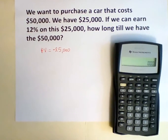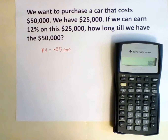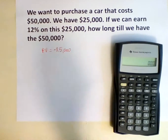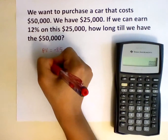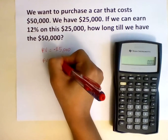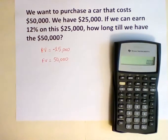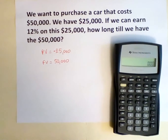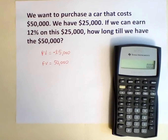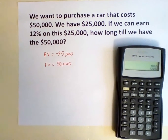$50,000 is the amount we hope to receive in the future, so the future value or FV is $50,000. We record it as a cash inflow, and so that is why it is a positive number.